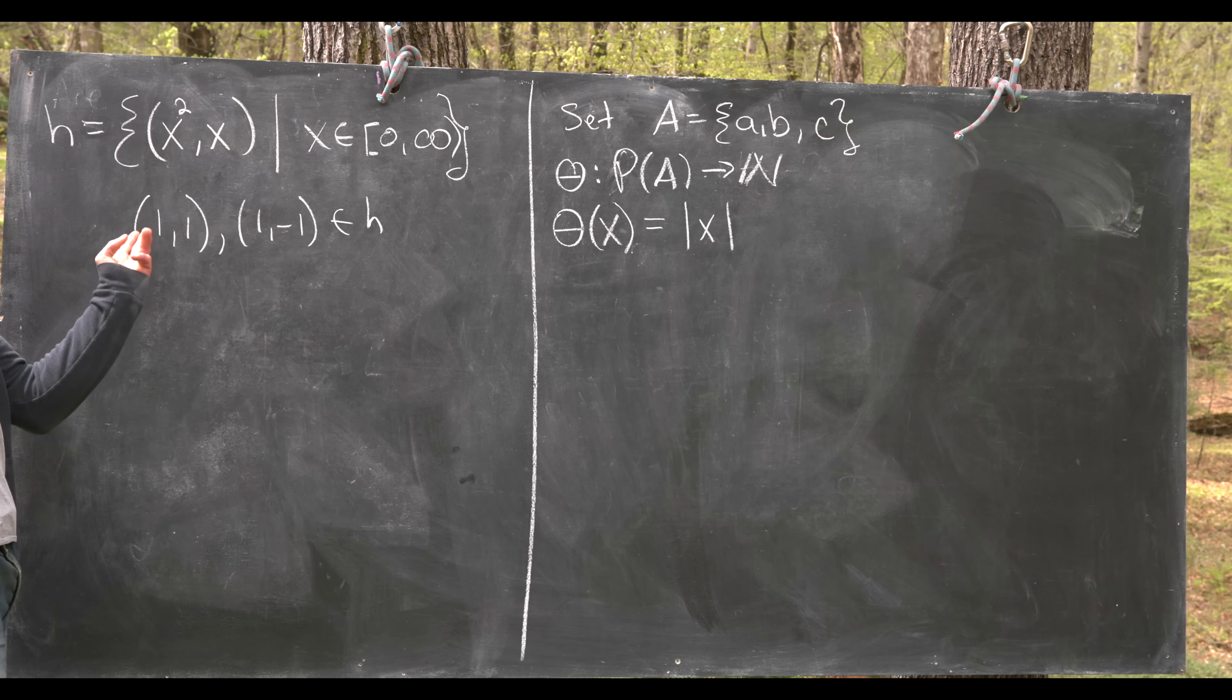But notice that means that the element from the domain 1 is paired with two elements from the codomain. It's paired with 1 and -1.